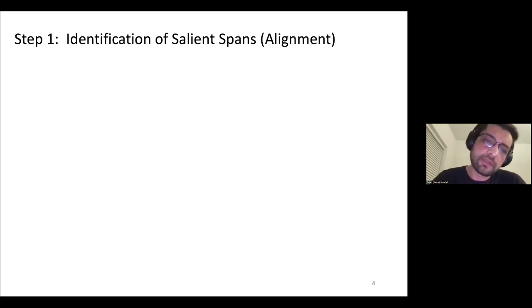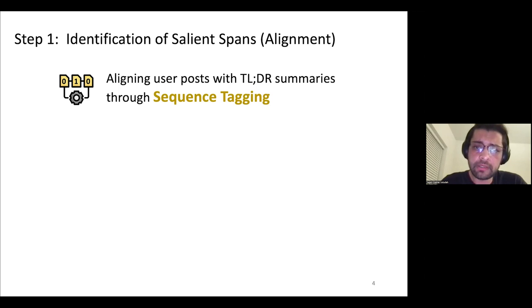Talking more about the steps, in the first step which is called identification of salient spans, we define a sequence tagging problem to basically label the words and phrases within the user post that are replicated in the TLDR summary.